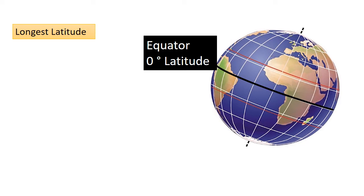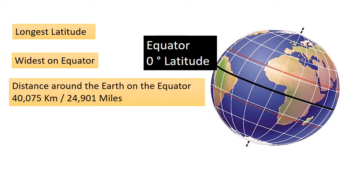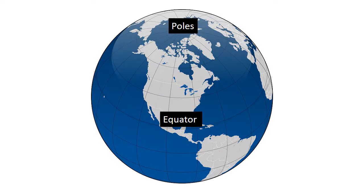That's why the Earth is widest at its equator. The distance around the Earth at the equator is 40,075 kilometers, or you can say it is 24,901 miles.